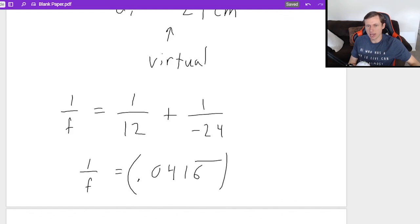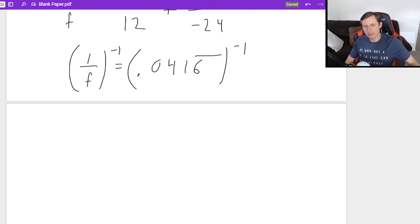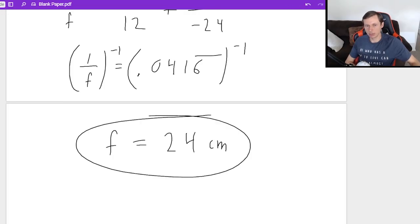And now if I want to find F, I just raise both to the negative first power. And my focal length F is going to be 24 centimeters. And the fact that it's positive 24 confirms the fact that we did want a concave mirror, like we said earlier.